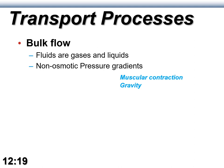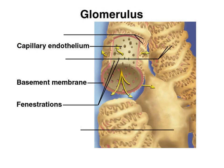Breathing is another form of bulk flow. Another example occurs in the filtration part of the kidney — the glomerulus inside Bowman's capsule. The glomerulus contains specialized capillaries with little pores running from the inside of the capillary into the extracellular fluid. These portals use hydrostatic pressure to move fluid out of the blood plasma into the filtrate, which will be processed to become urine.